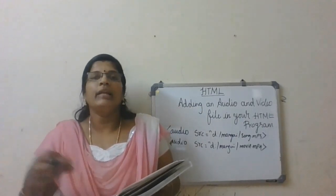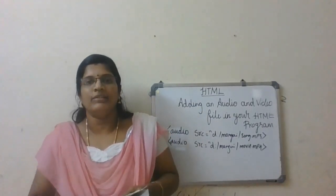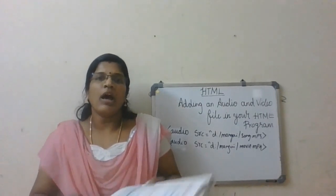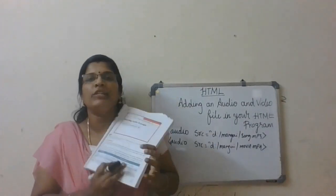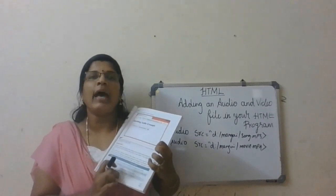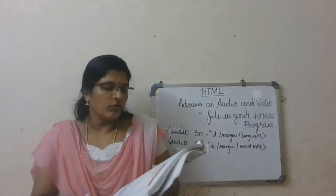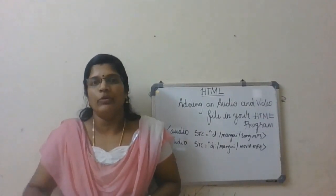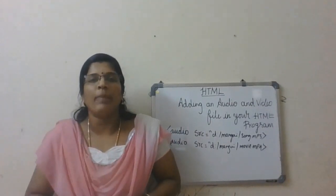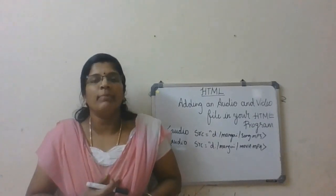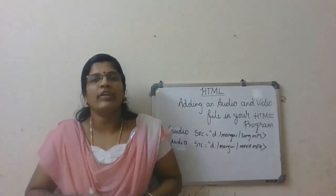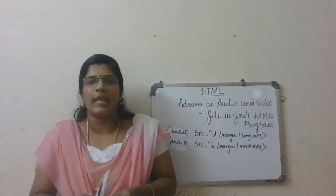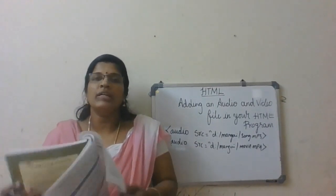The 'src' attribute specifies the link or path where the audio or video file resides. Now turn to page 45 for the video attributes. Video has the same attributes — autoplay, controls, loop — plus 'height' and 'width' to specify the size, just as we did for images.